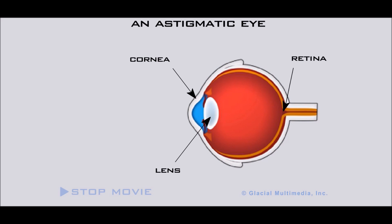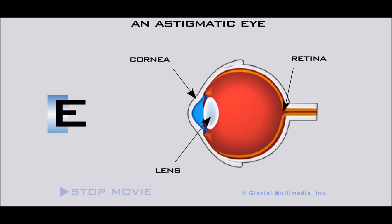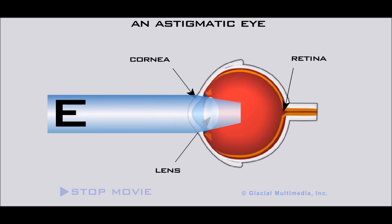Astigmatism is a common vision condition where the corneal surface is not evenly shaped, causing one to see ghosting or shadowing of images.